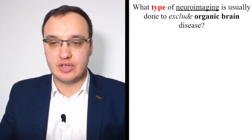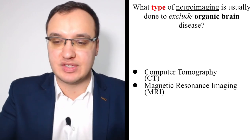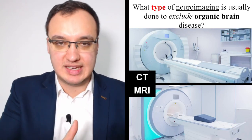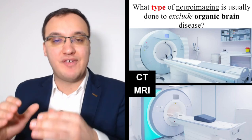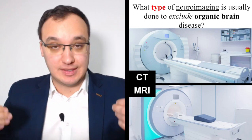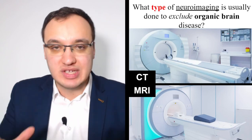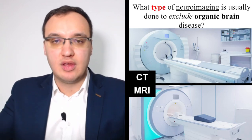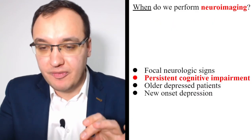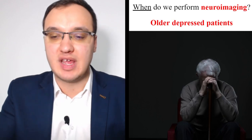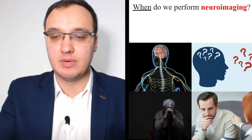Quick review: to exclude organic brain disease, we use CT and MRI. MRI is more costly, so we start with CT. If we find something on CT or expect something, we then do an MRI, which has higher resolution. CT is sufficient as a first screening tool. We perform imaging for focal neurological signs, persistent cognitive impairment, depression in older patients, and new onset depression. Thank you very much for listening.